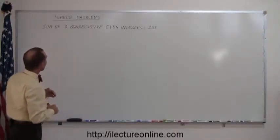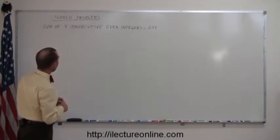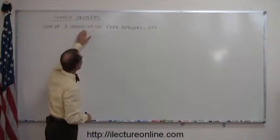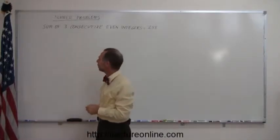Here's another example of a number problem. In this case we're adding three numbers together and the numbers are even integers and they need to be consecutive. So a consecutive even integer, what is that?